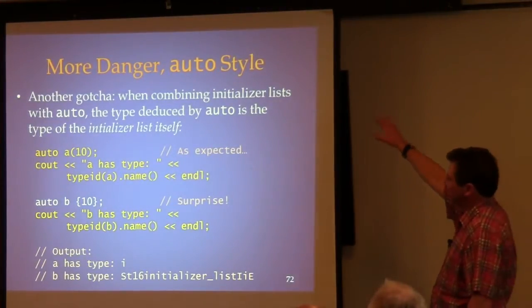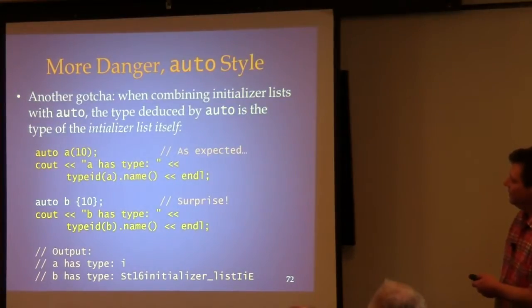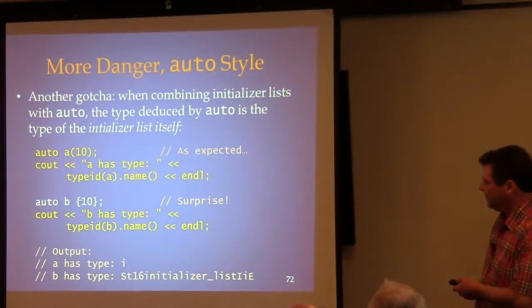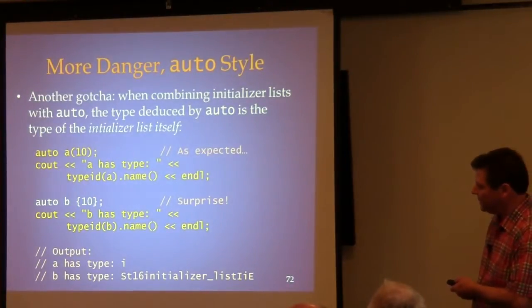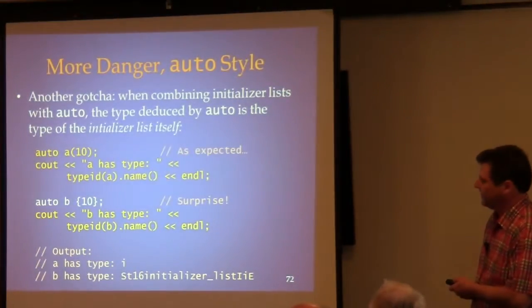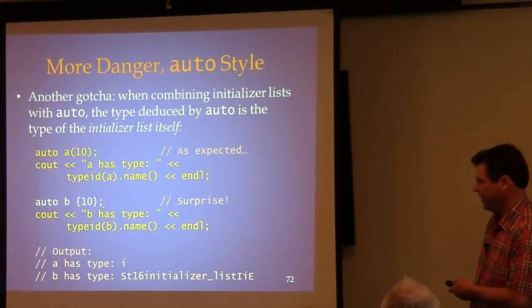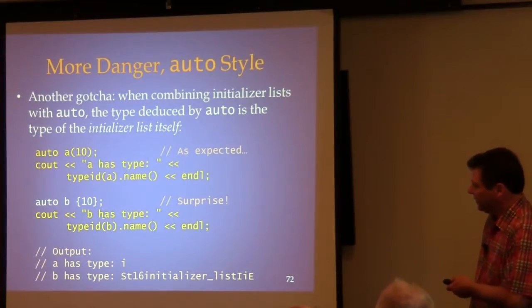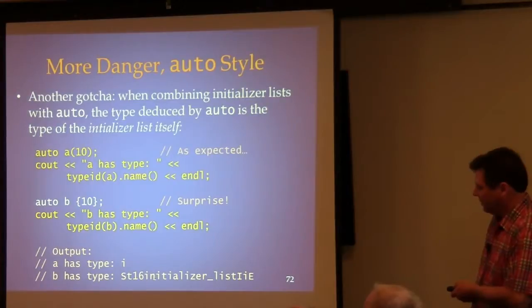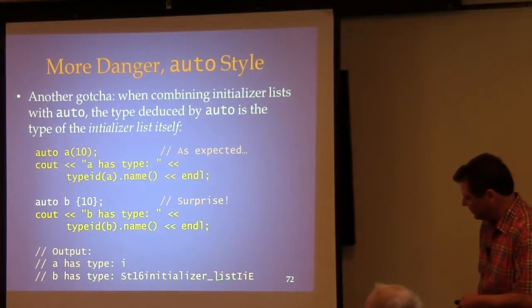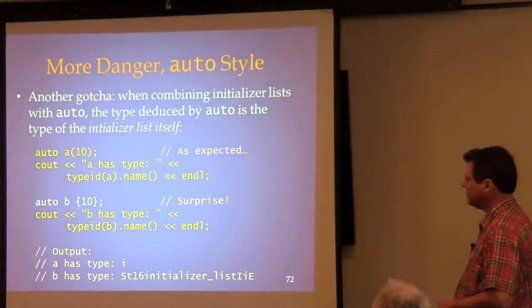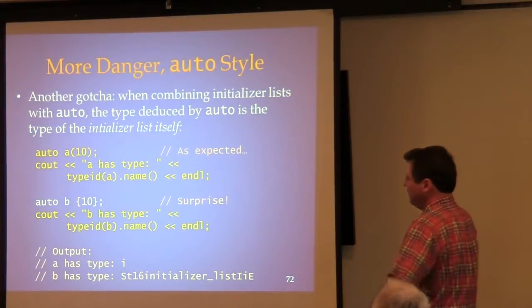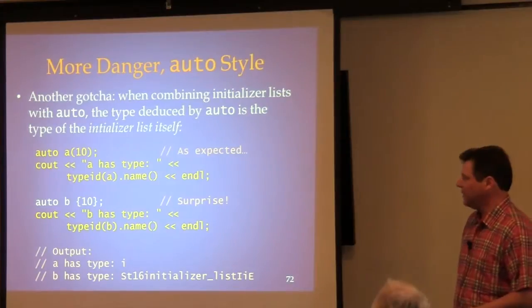Another gotcha involves auto mixed in with initializer lists. If you use auto where it deduces the type and you use an initializer list, the type deduced for that variable is 'initializer_list of something' — not really intuitive. Using RTTI to prove it: if you declare 'auto a = 5', a has type int, but 'auto b = {5}' gives b the type initializer_list. Be careful — there's no universal solution to this; you just have to not mix auto and initializer list.